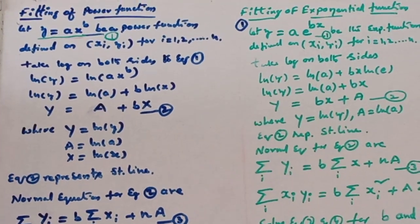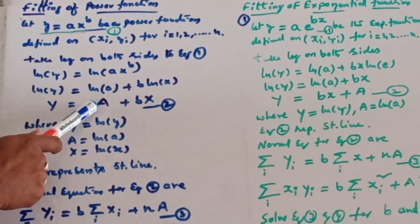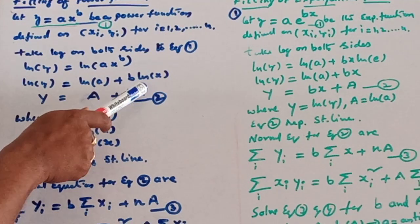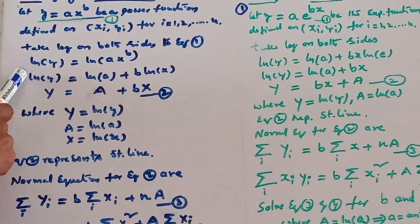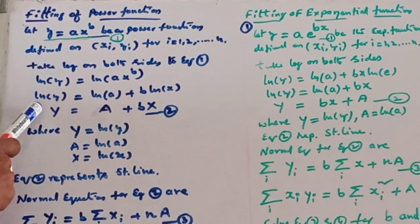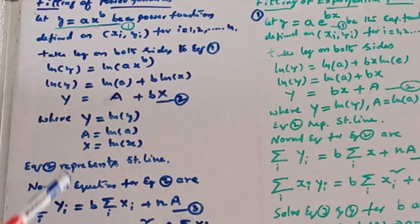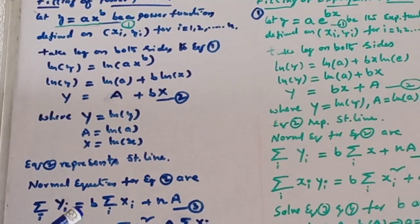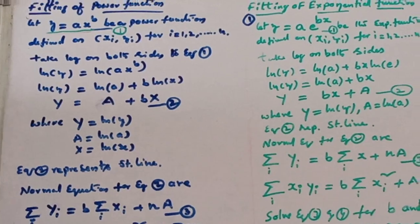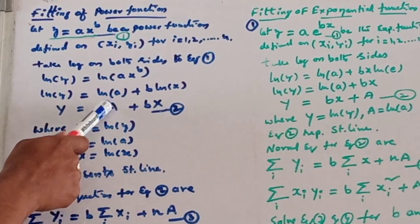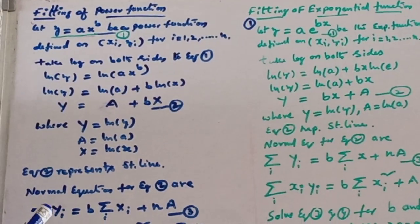Now take log y equal to capital Y, log a equal to capital A, and log x equal to capital X. So the equation becomes capital Y equal to b times X plus A — which is of the form Y equal to mX plus c, representing a straight line.